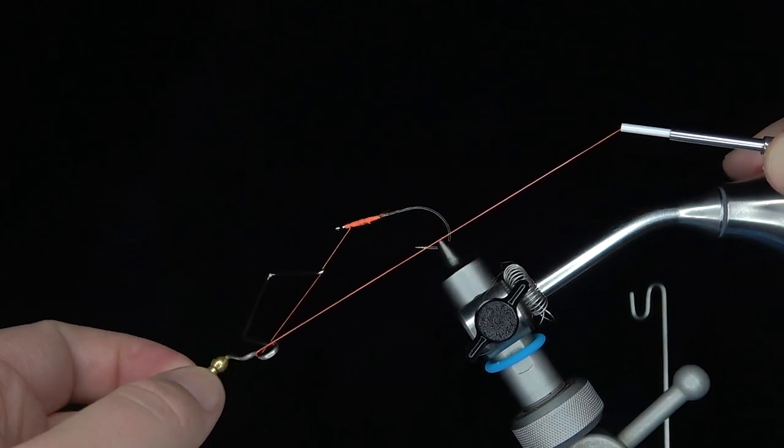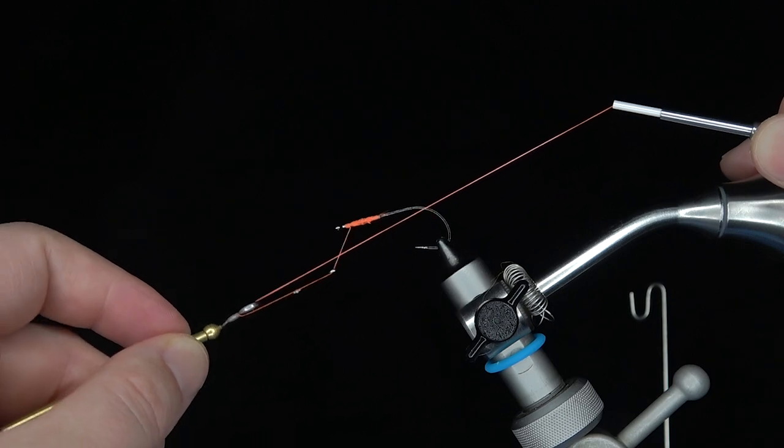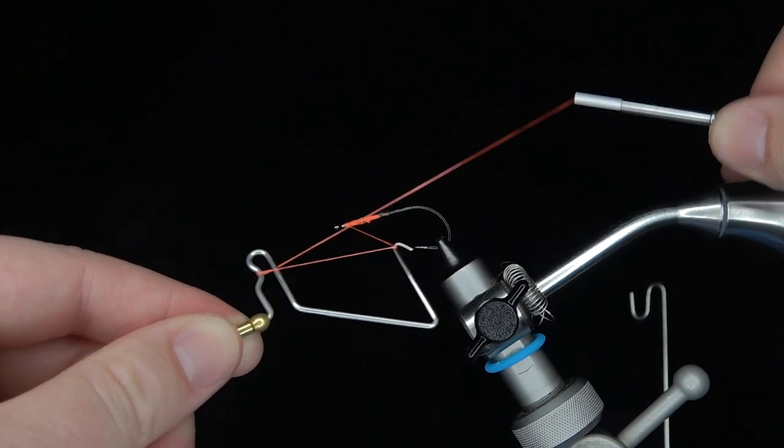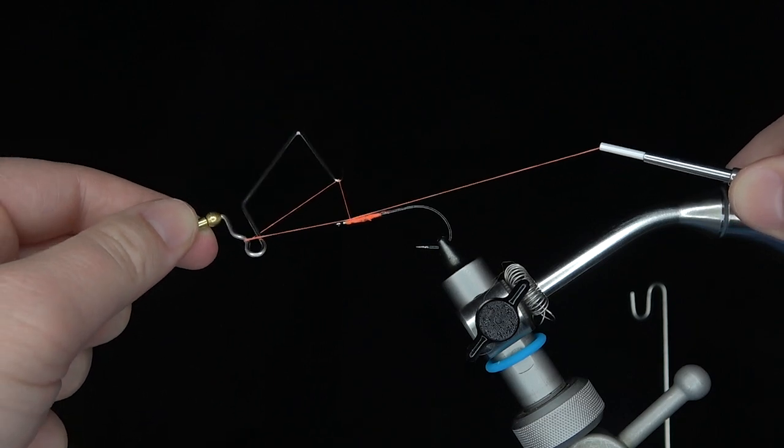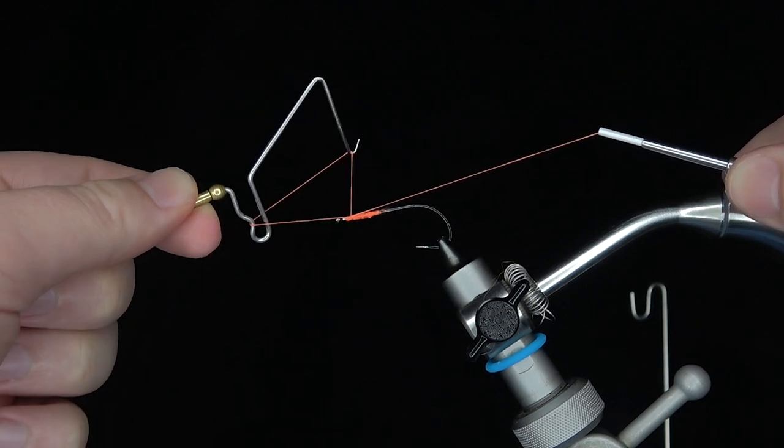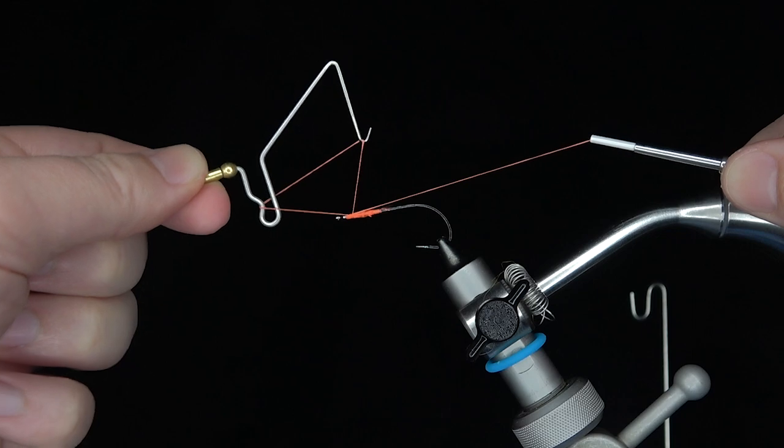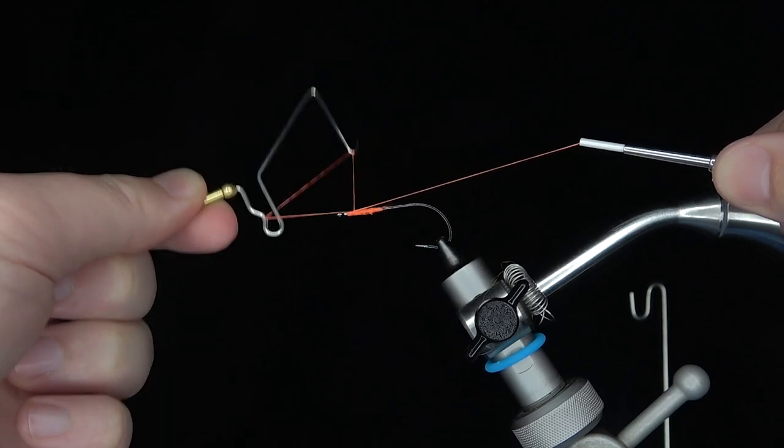I'm going to slide my fingers down and pull towards me and up until the threads cross. I'm going to move that cross to the hook, do five rotations, wiggling a little bit more thread out after each rotation.